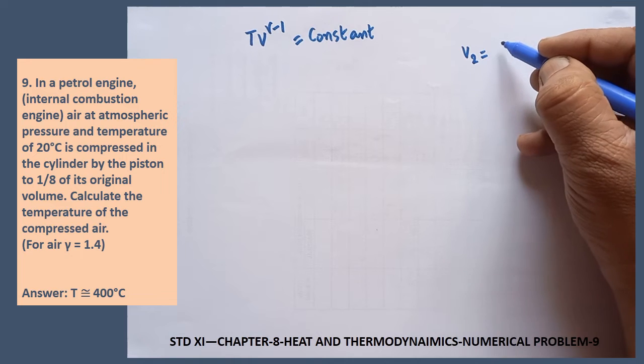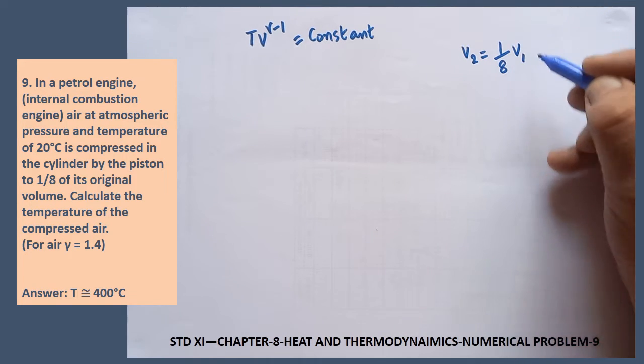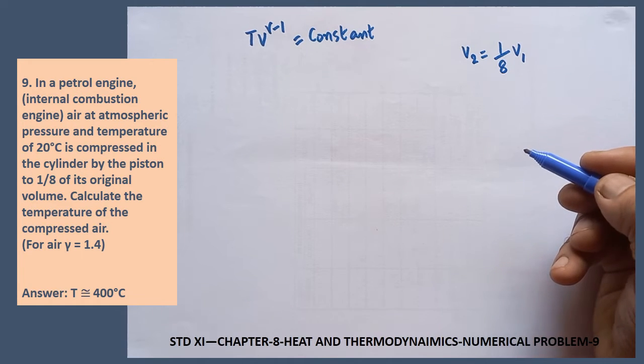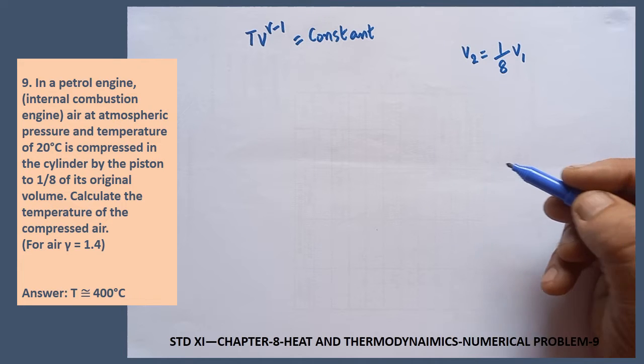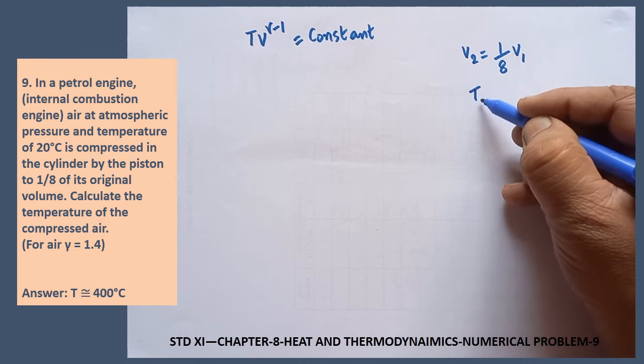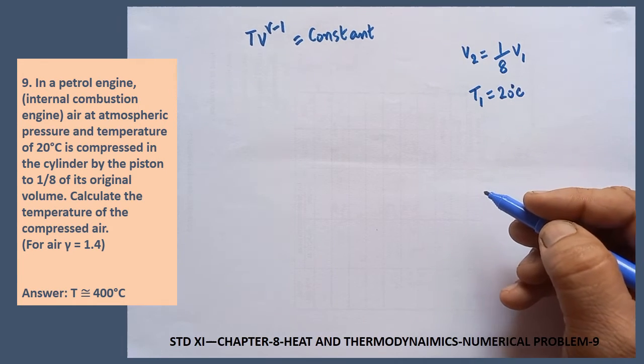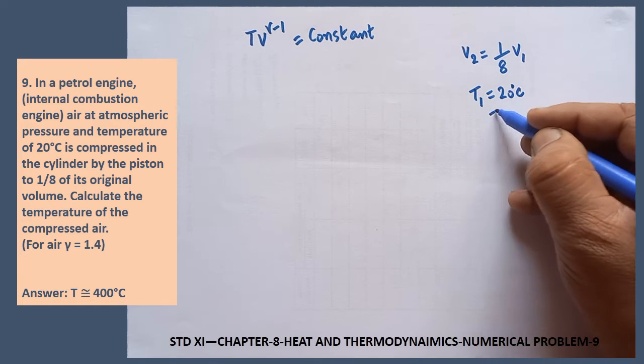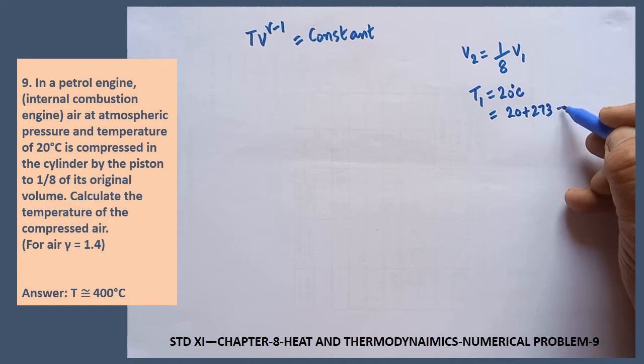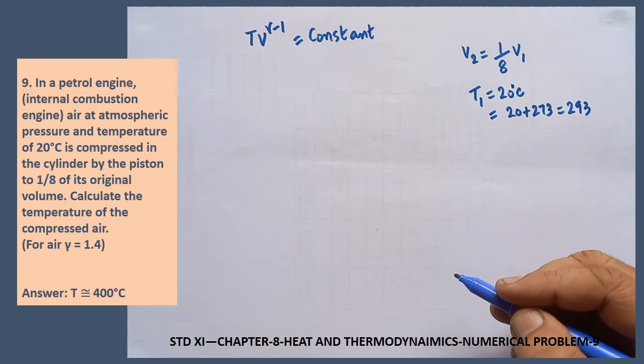Therefore, V2 becomes one eighth of the original volume. And then, the temperature of the air is how much? T1 is given 20 degree Celsius. The 20 degree Celsius must be converted into Kelvin. 20 plus 273, which is equal to 293.